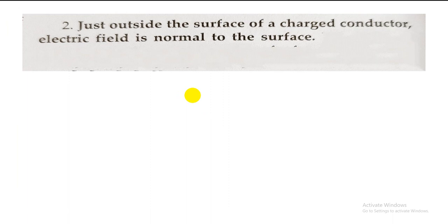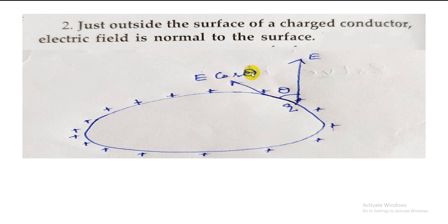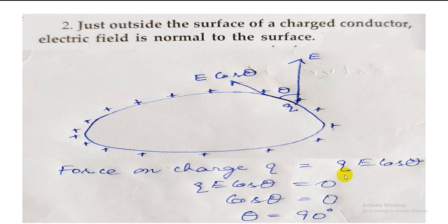Moving to the next point: just outside the surface of a charged conductor, the electric field is normal to the surface — that is, it makes an angle of 90 degrees with the surface. Consider a conductor of any shape with charges distributed over its surface. If we consider an electric field making a certain angle theta with the surface, the component of electric field along the tangent to the surface will be E cos theta. If a charge Q is placed there, it would experience a force Q·E·cos theta.